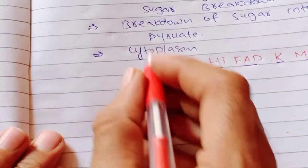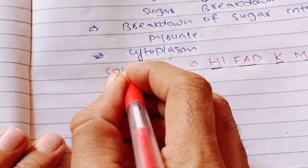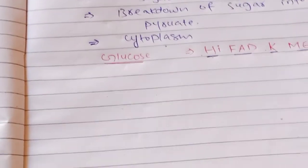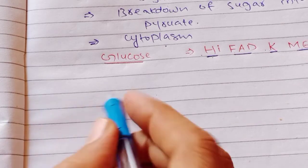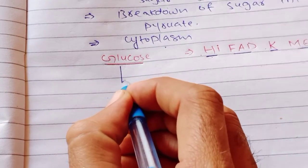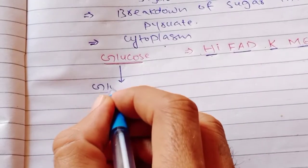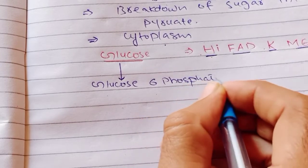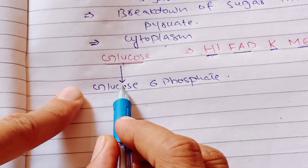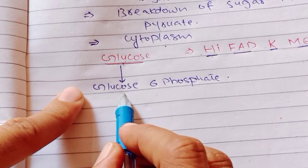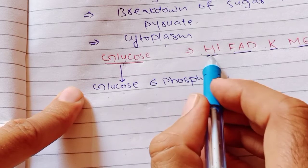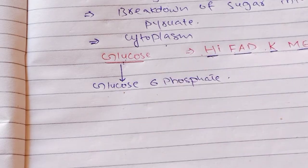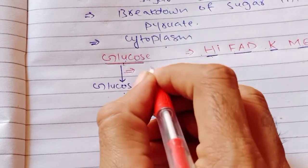Glycolysis starts from glucose. First of all, glucose will be converted into glucose-6-phosphate. This step is catalyzed by the enzyme starting with H — that means Hexokinase.